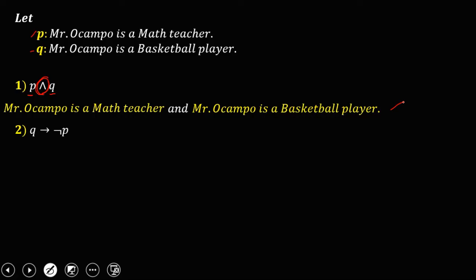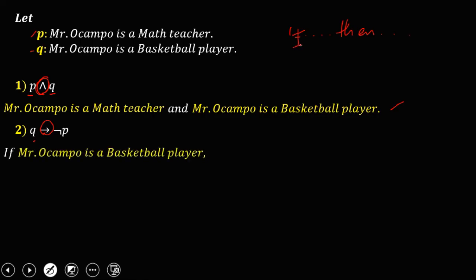For this equation, Q implies not P. Since we have the arrow, that means 'if the first statement, then the second statement.' Since our first statement is Q, therefore: 'If Mr. Ocampo is a basketball player, then' — since not P is the negation of P — 'Mr. Ocampo is not a math teacher.'